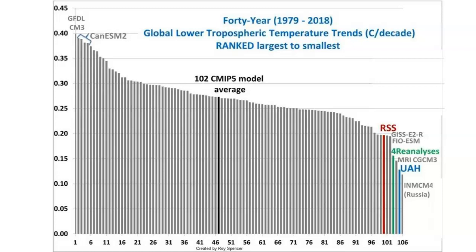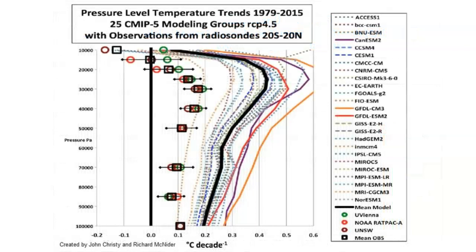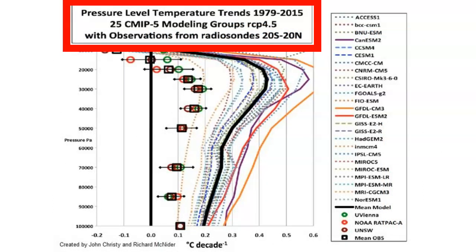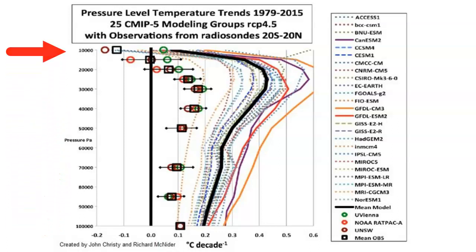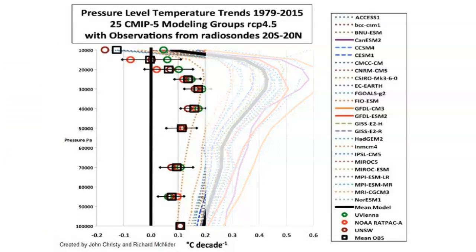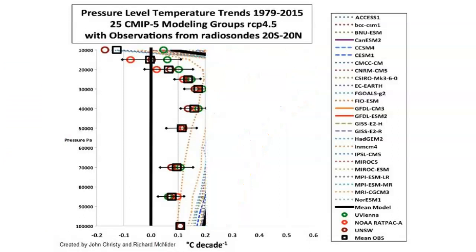So now let's look at this last graph — the 10-mile-high graph. It shows outputs for the 25 major climate models compared to radiosonde data, for Earth's tropical regions from 20 degrees south to 20 degrees north. This graph shows model output for all levels throughout the troposphere. Earth's surface is here at 1,000 millibars, and at the top, about 10 miles high, is the 100 millibar level.